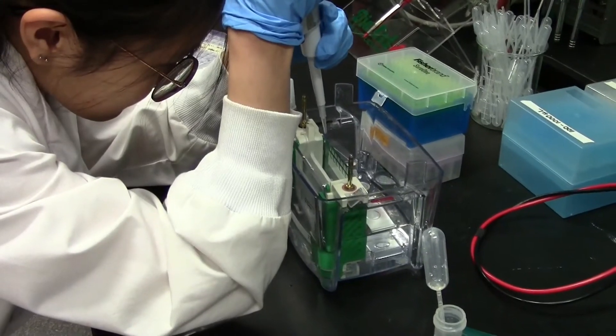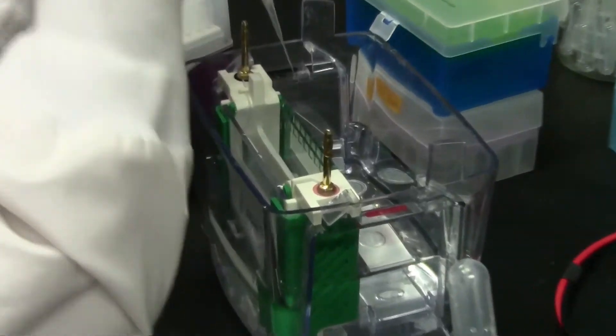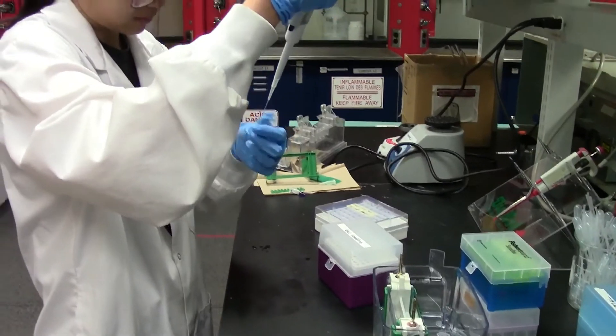Next, using a micropipette with gel loading tips, you should carefully load 5 microliters of dye containing bromophenol blue and xylene cyanol FF.